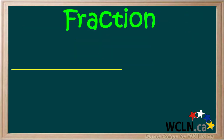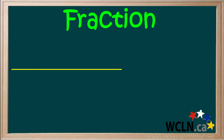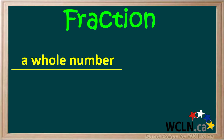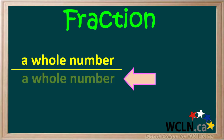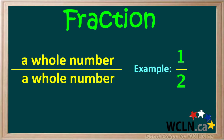In a fraction, we always have a line like this. Above the line there's a whole number, and below the line, another whole number. An example would be the number one on top and the number two on the bottom. Another example could be a three on top and an eight on the bottom.